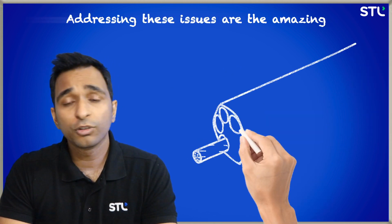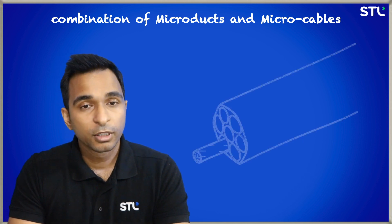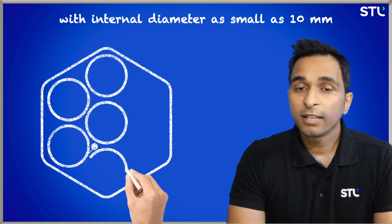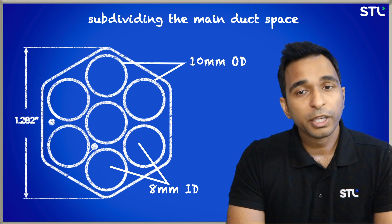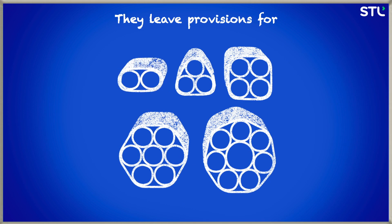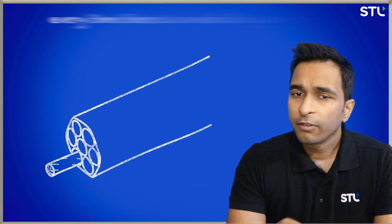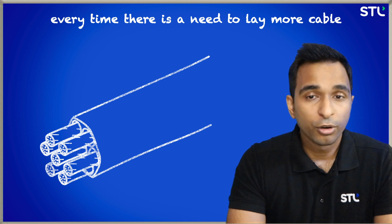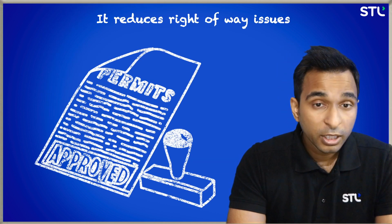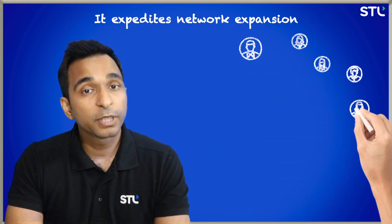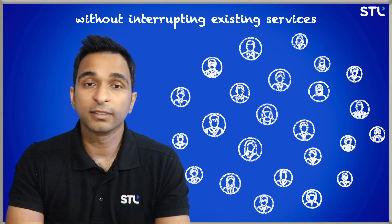Addressing these issues is an amazing combination of micro ducts and micro cables. So what are micro ducts? These are smaller conduits with an internal diameter as small as 10mm, subdividing the main duct space. They leave provisions for 2, 3, 4, 7, or even 8 pathways inside the same duct, eliminating the need to dig and put a new duct every time there is a need to lay more fiber or cable. It reduces right-of-way issues and increases the speed of network rollout.